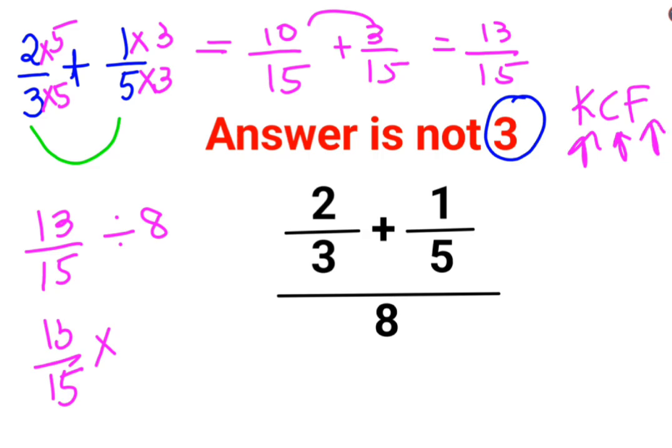F stands for flipping or taking reciprocal of 8 which is 1 upon 8. So answer for this question is supposed to be 13 upon 120.